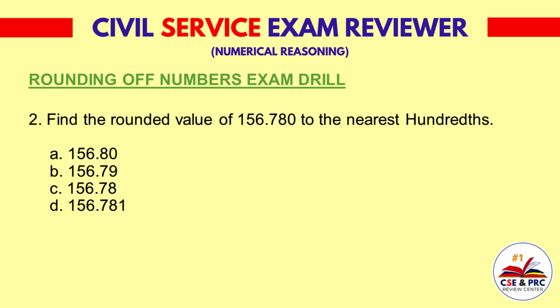Question 2: Find the rounded value of 156.780 to the nearest hundredths. A. 156.80, B. 156.79, C. 156.78, D. 156.78. The answer is C: 156.78.